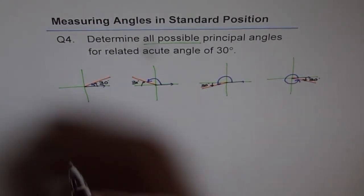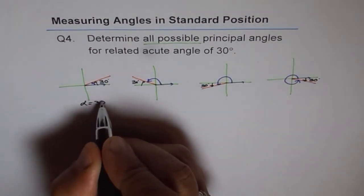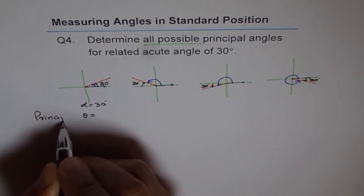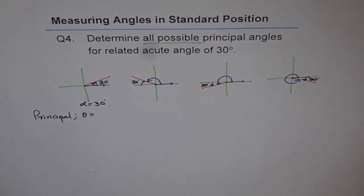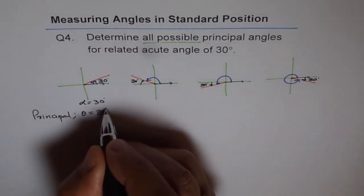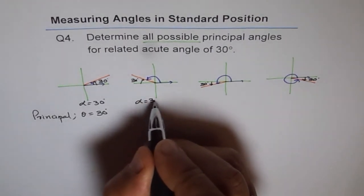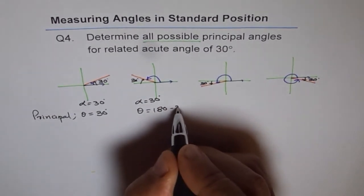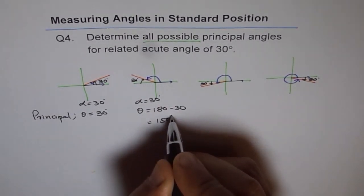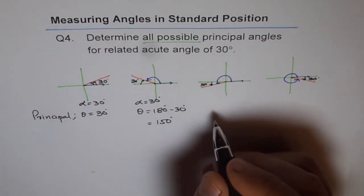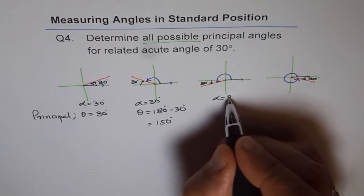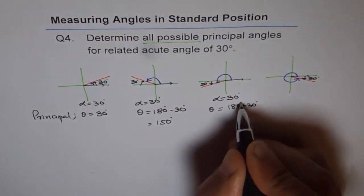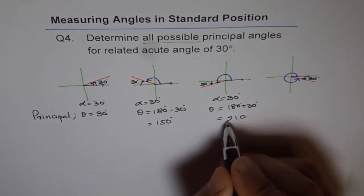Let's do them one by one. We have acute angle alpha of 30 degrees. The principal angle theta in quadrant 1 is also 30 degrees. In quadrant 2, the acute angle is 30 degrees but principal angle theta equals 180 minus 30, which is 150 degrees. Don't forget the degree sign. In quadrant 3, alpha is 30 degrees, so theta is 180 plus 30 degrees, which is 210 degrees.